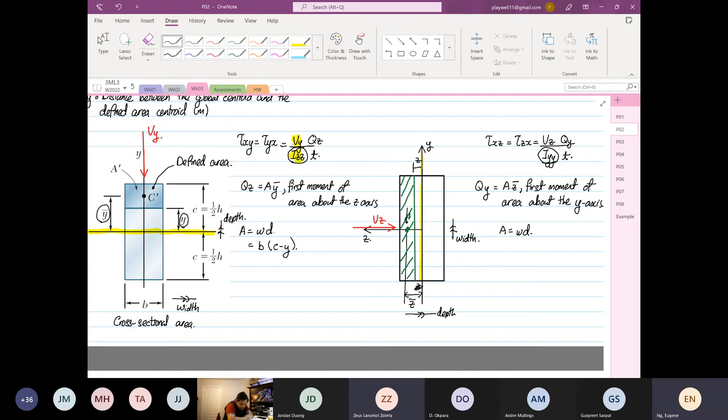On the other side, the width on the right-hand diagram, the width is now equal to what? 2C. And this will be equal to B over 2 minus by Z. So let me quickly summarize this point.